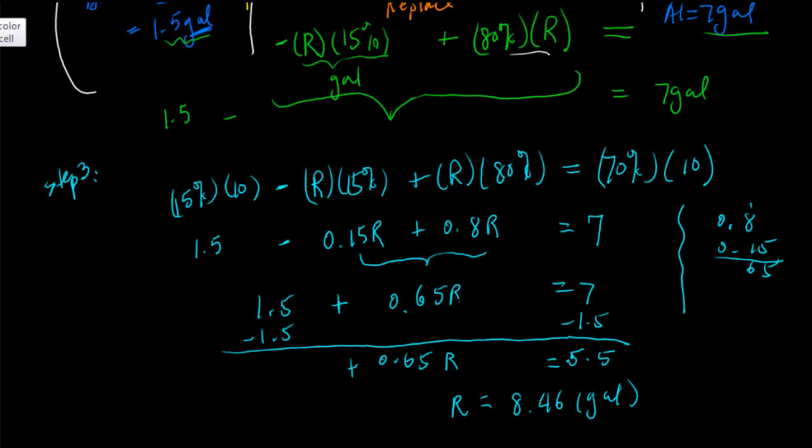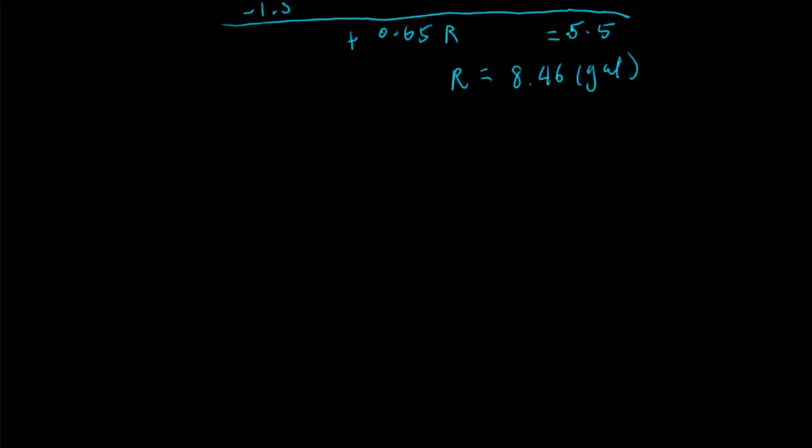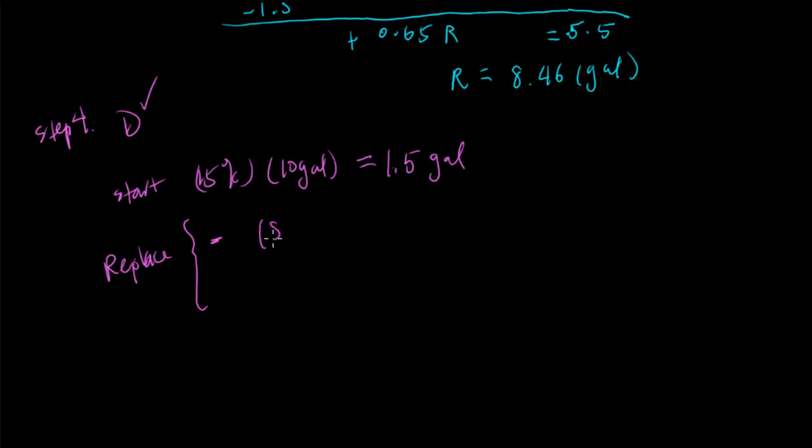Now moving on to the last step where we need to check to make sure all the math worked out. Step number four. Let's double check. We started with 15% of 10 gallons. So this is equal to 1.5 gallons. We said we want to replace. Replace is two steps. First, we took away 8.46 gallons at 15%. And this one, if you run it through your calculator, this one is 1.269 gallons of alcohol.